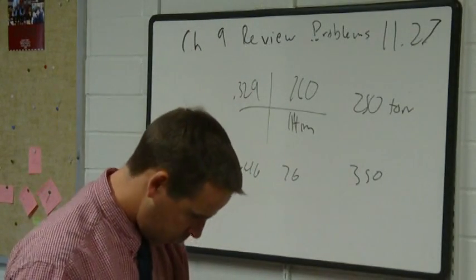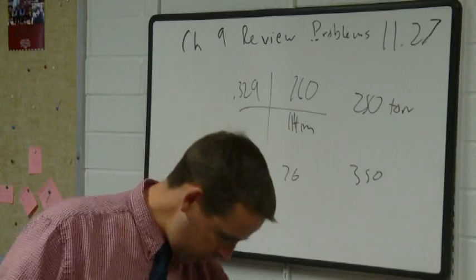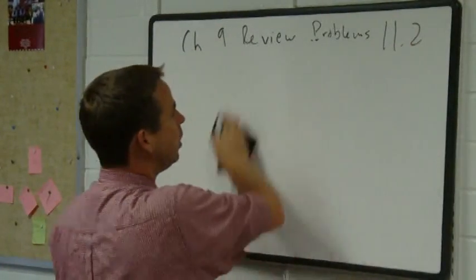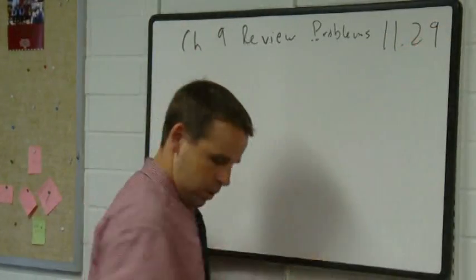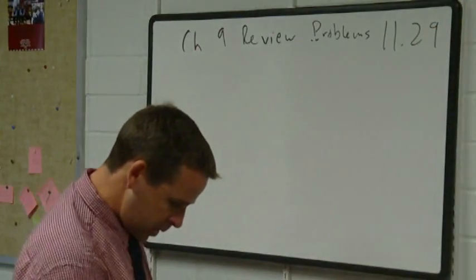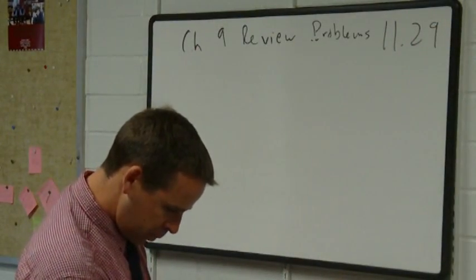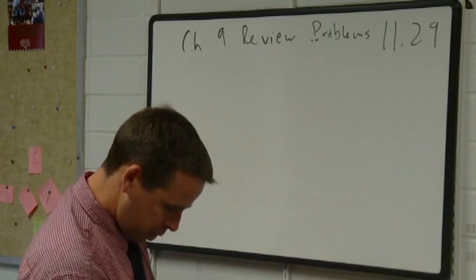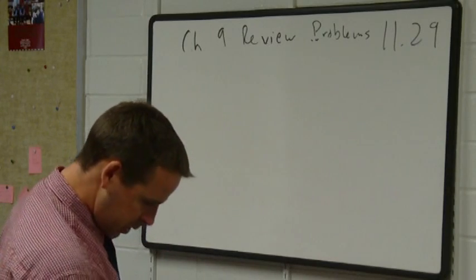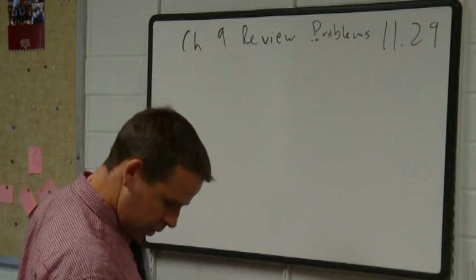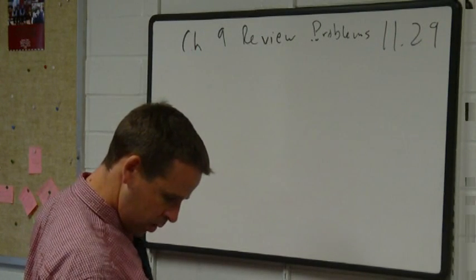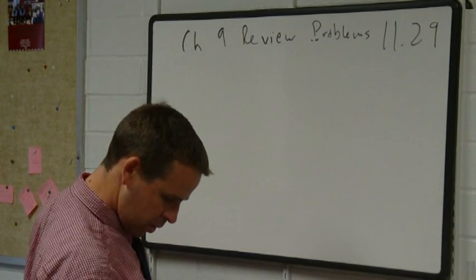Problem 1129: an open-ended manometer containing mercury was connected to a vessel holding a gas at a pressure of 720 torr. The atmospheric pressure was 765 torr. Sketch a diagram of the apparatus showing the relative heights of mercury in the two arms and find the difference in heights expressed in centimeters.